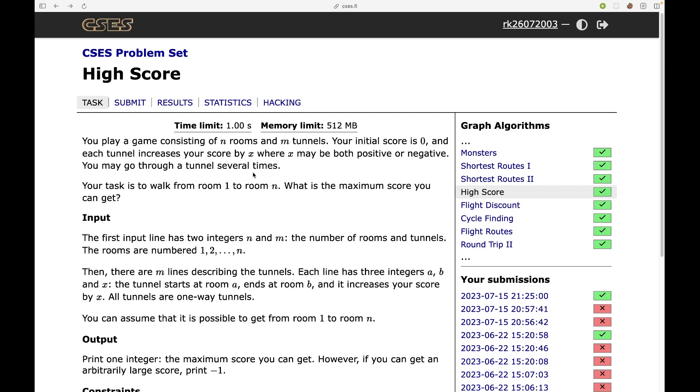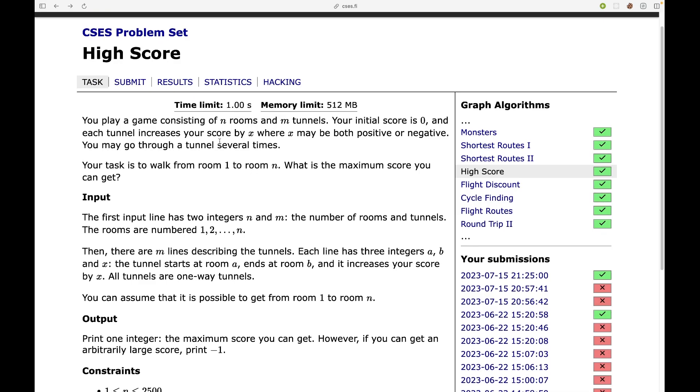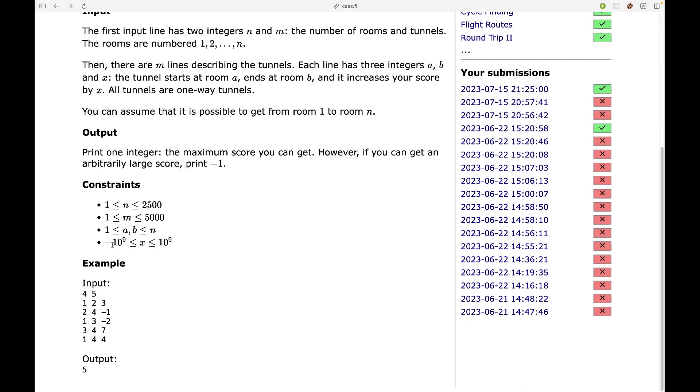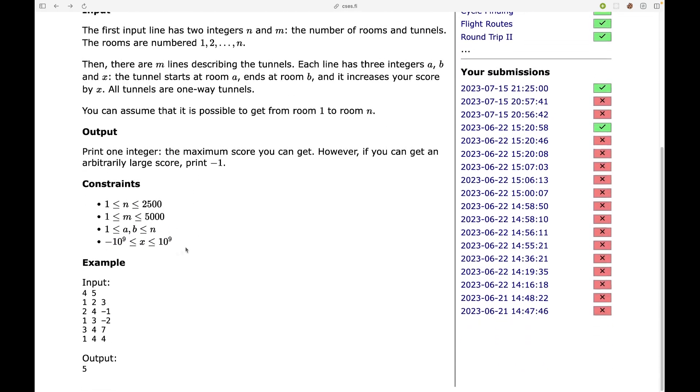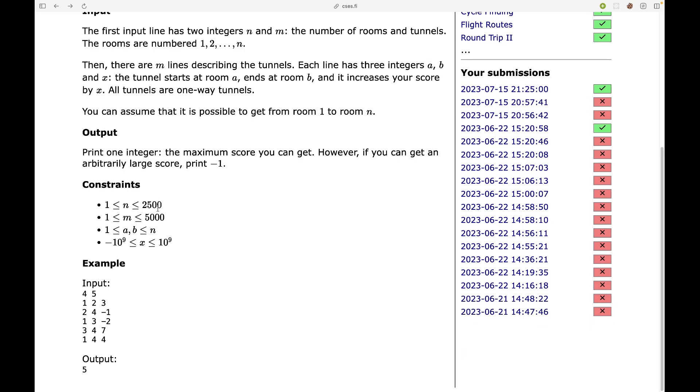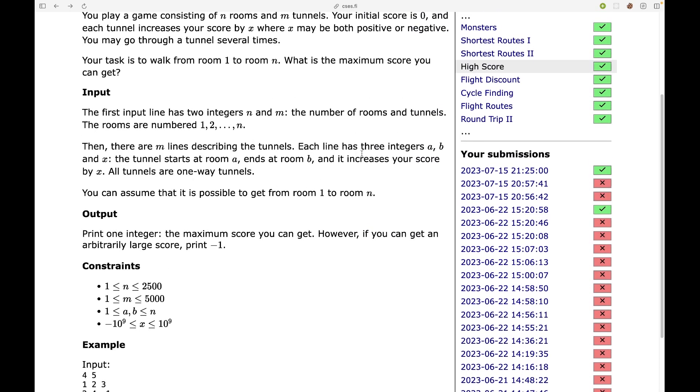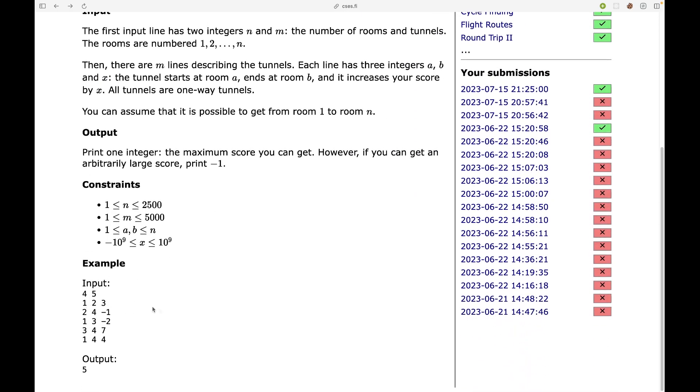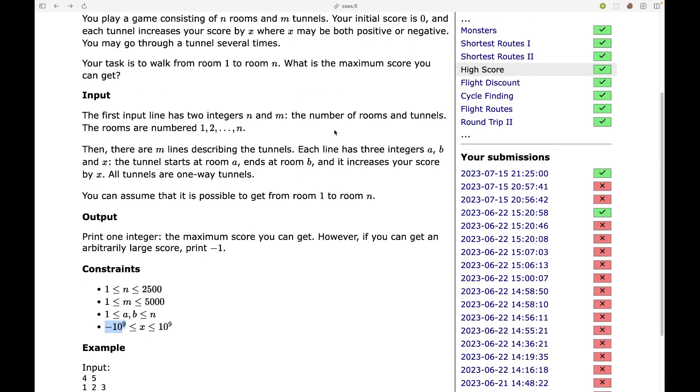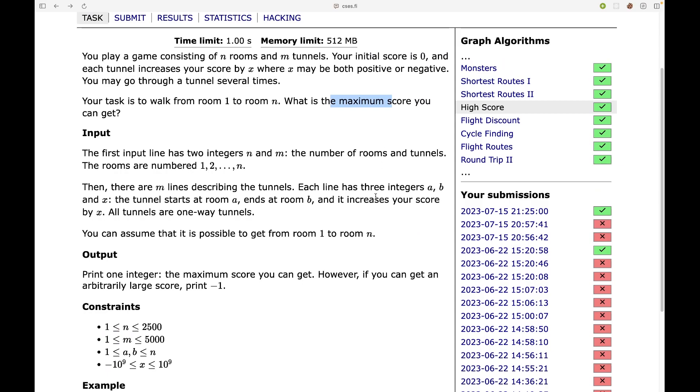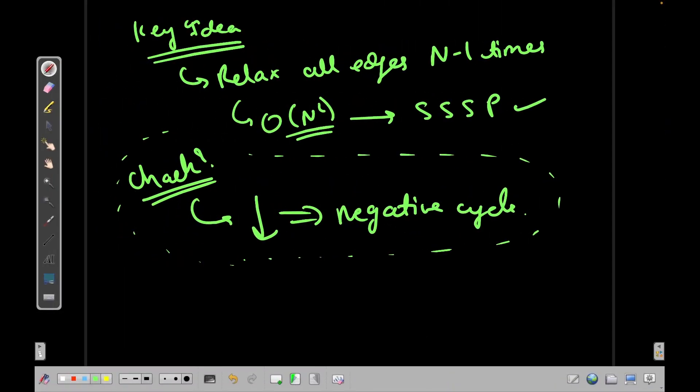Your task is to walk from room 1 to room n and what is the maximum score you can get. Now the problem is, obviously in this case, the value of x can be positive or negative, right? We have a directed graph and there are some weights around it, and the weights can go negative in this case. And we want to see what is the maximum score that we can get.